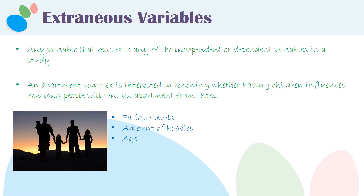The amount of hobbies that parents have is likely to be lower with children than the amount of hobbies that people have when they don't have children. And people who have children are likely to be older than people who don't have children. So those are all extraneous variables that relate to the independent variable.